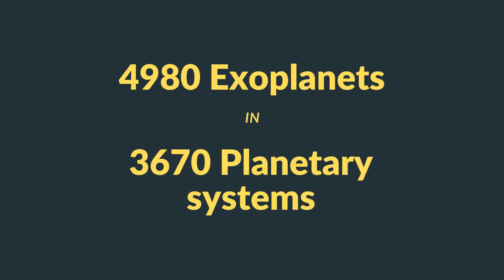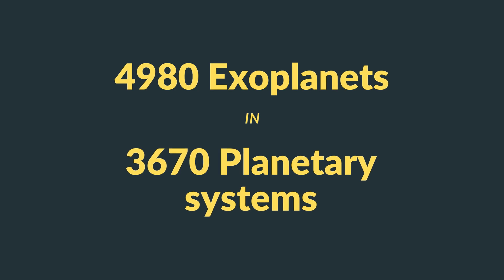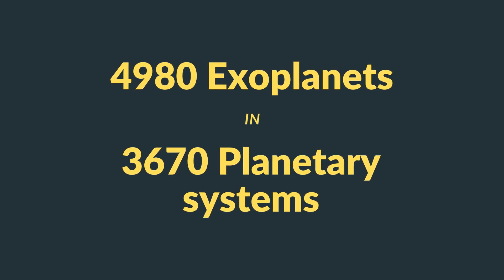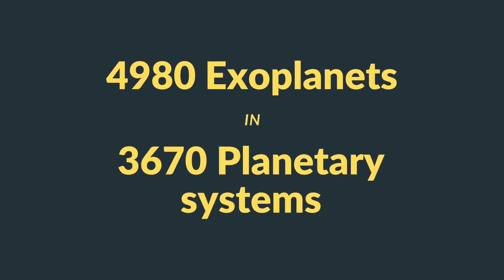As of March 2022, we have a total of 4,980 exoplanets in 3,670 planetary systems.